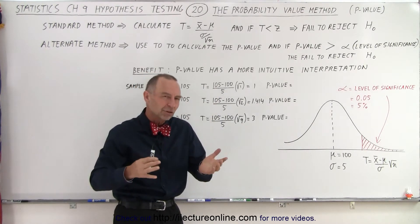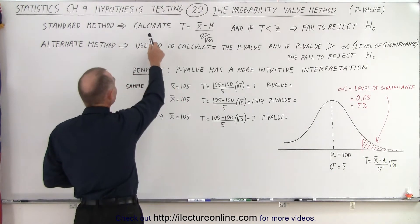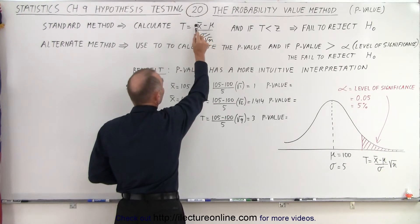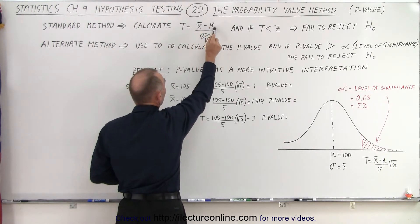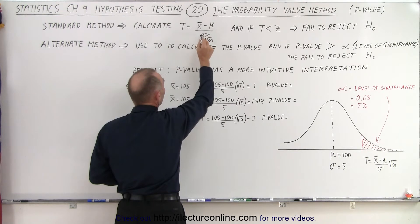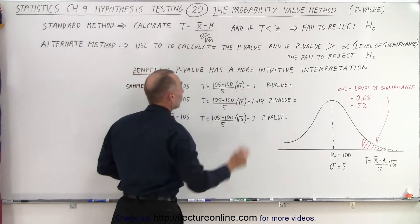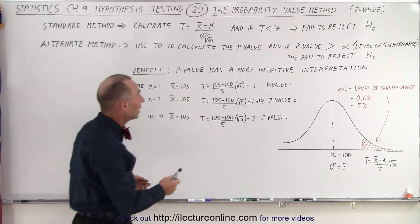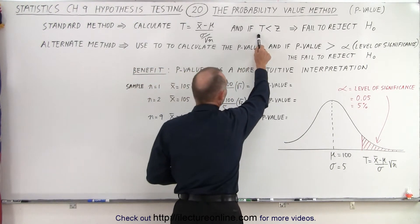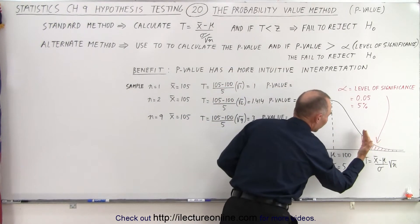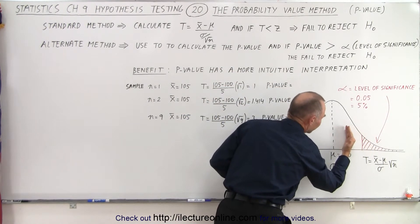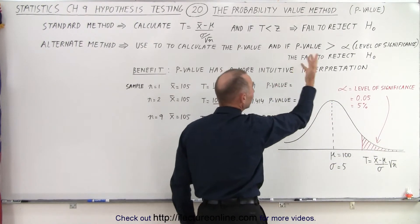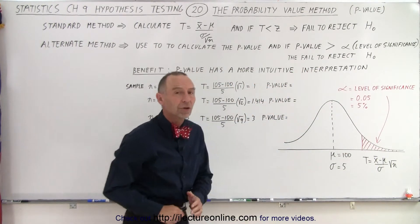What was the original standard method? We end up calculating the t-statistic. We take the difference between the mean of the sample and the mean of the population, and divide it by the ratio of the standard deviation of the population with the square root of the sample size. Then we get a value for the test statistic, and if it's less than the z-score — meaning the test statistic falls to the left of the critical region — then we end up failing to reject the null hypothesis.